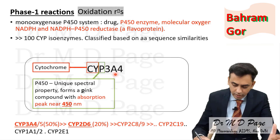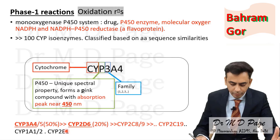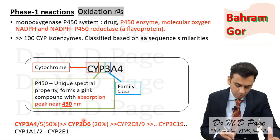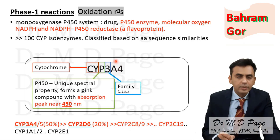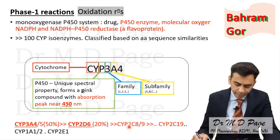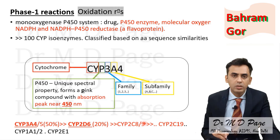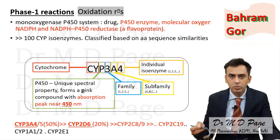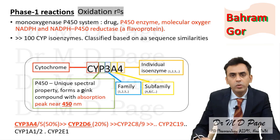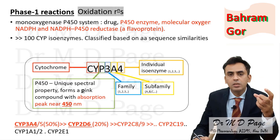In CYP3A4, 'CY' stands for cytochrome, 'chrome' meaning color, 'P' stands for pink, and 450 is its absorption peak. The number 3 represents the family; CYP2D6, 2C8, 2C19, and 2E1 all belong to family 2. The letter 'A' or 'C' represents the subfamily, and the final number like 4, 6, 8, or 19 represents the individual isoenzyme.